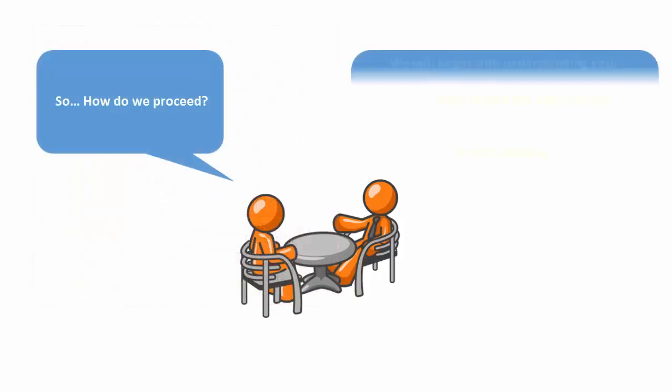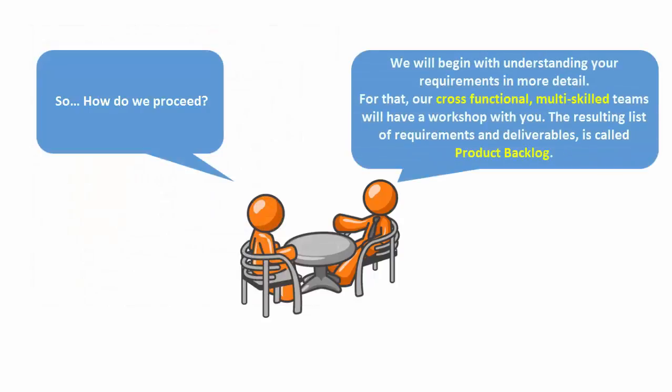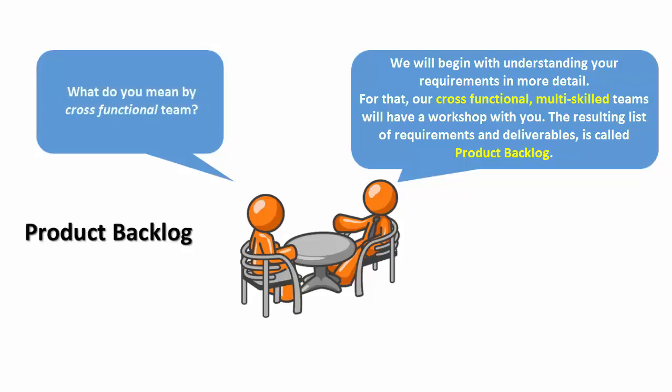So how do we proceed? We will begin with understanding your requirements in more detail. Our cross-functional multi-skilled team will have a workshop with you. The resulting list of requirements and deliverables is called the product backlog. What do you mean by cross-functional team?